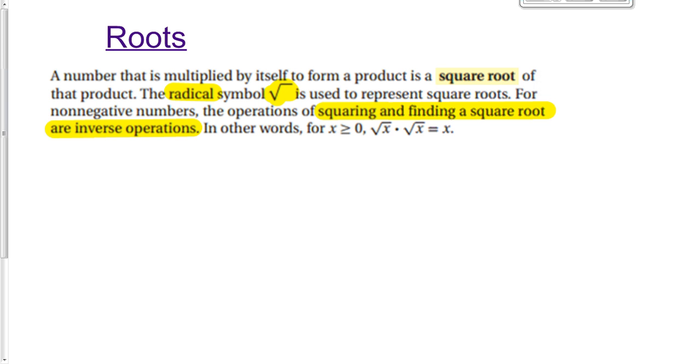I have a couple things highlighted here. You can see the definition of a square root is kind of confusing in words. It says a number that is multiplied by itself to form a product is a square root of that product. We'll actually go through some examples, but a couple things I want to point out. Another name for roots is radicals, and this is the symbol. So a square root and radical are the same thing. If you ever hear me say radical instead of root or square root, that's what I'm talking about.